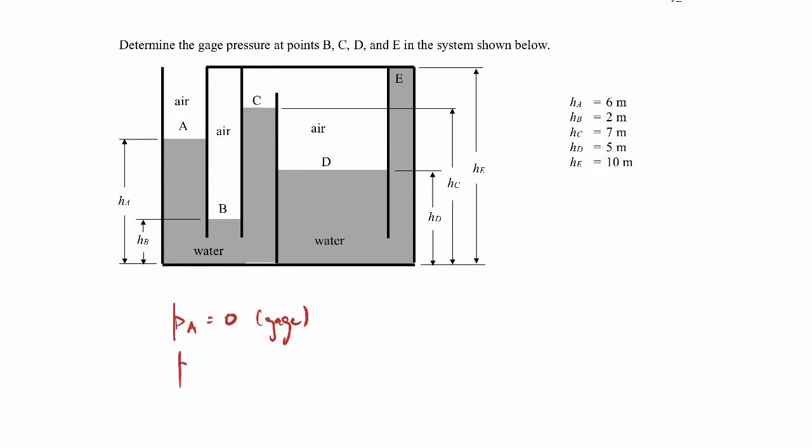But in the end, what we'll get is the pressure at B will be the pressure at A plus rho of the water times g times HA minus HB. HA minus HB because that's what this distance is here. We're adding in the weight of the water over that distance, which is this distance. So that gives us the pressure at B.